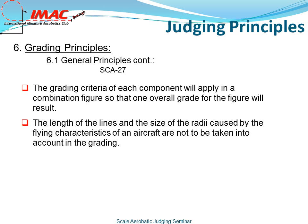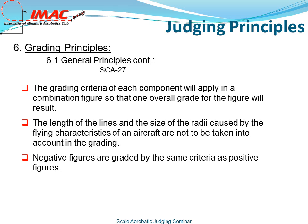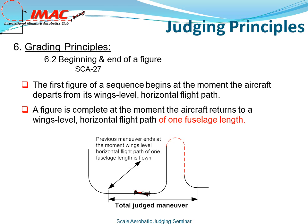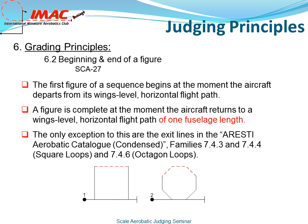The length of the lines and the size of the radii caused by the flying characteristics of the aircraft are not to be taken into account in the grading. Negative figures are graded by the same criteria as positive figures. Speed of the aircraft is not a criterion. The first figure of a sequence begins at the moment the aircraft departs from its wings-level horizontal flight path. A figure is complete at the moment the aircraft returns to a wings-level horizontal flight path of one fuselage length. The only exception to this are the exit lines of the Aresti aerobatic catalog, family 7.4 and 7.6.